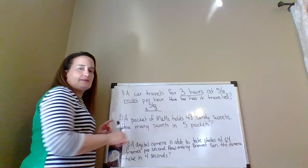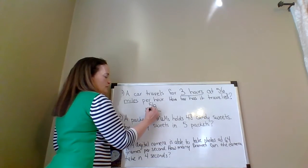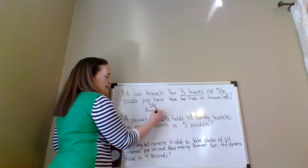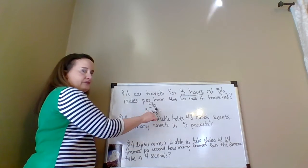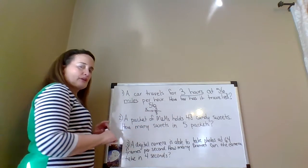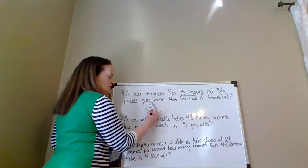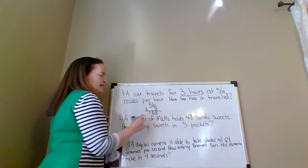6 times 3 is 18. The 1 in the tens place and the 8 in the ones place. 5 times 3 is 15 plus 1 is 16, so we have 168.